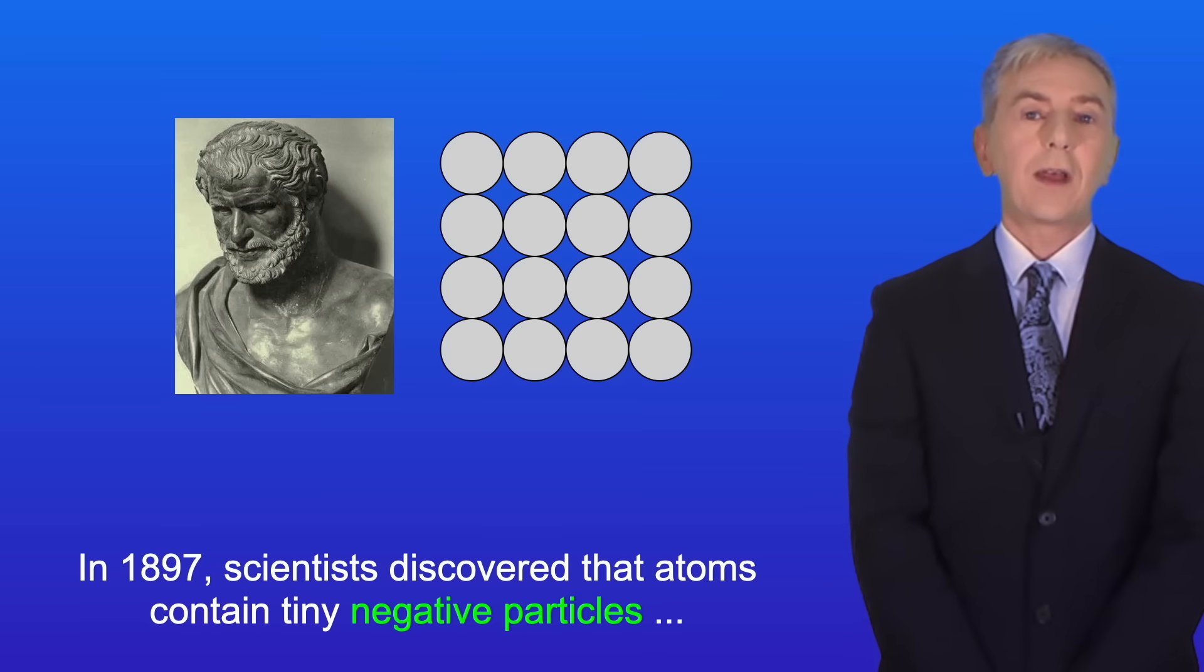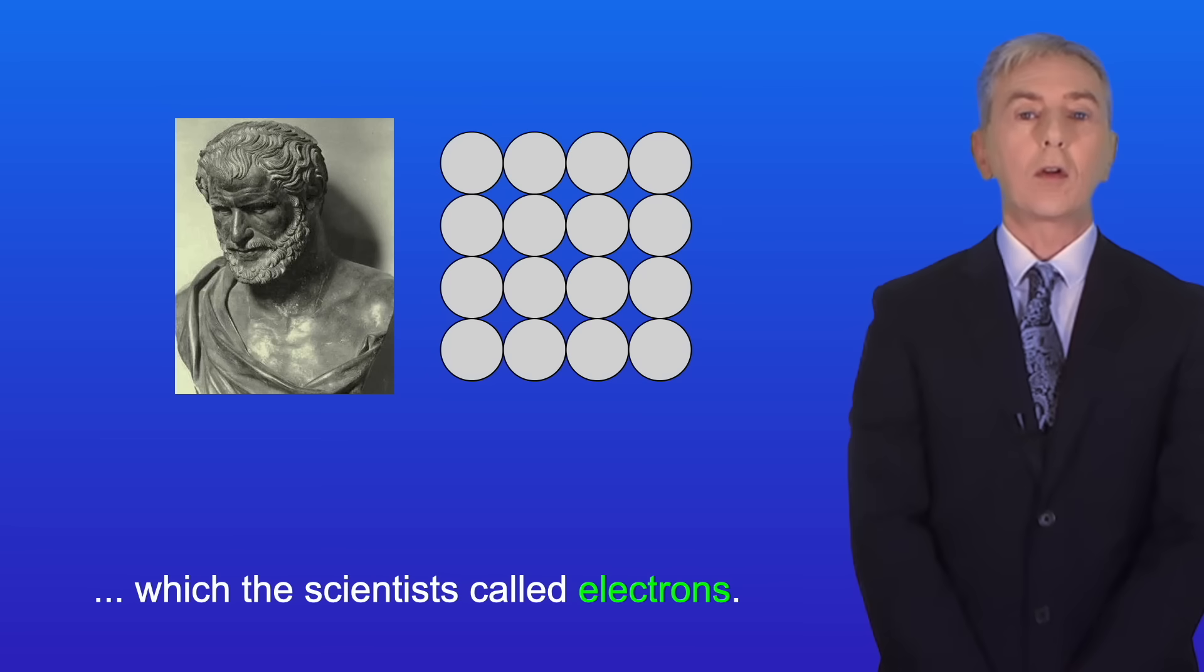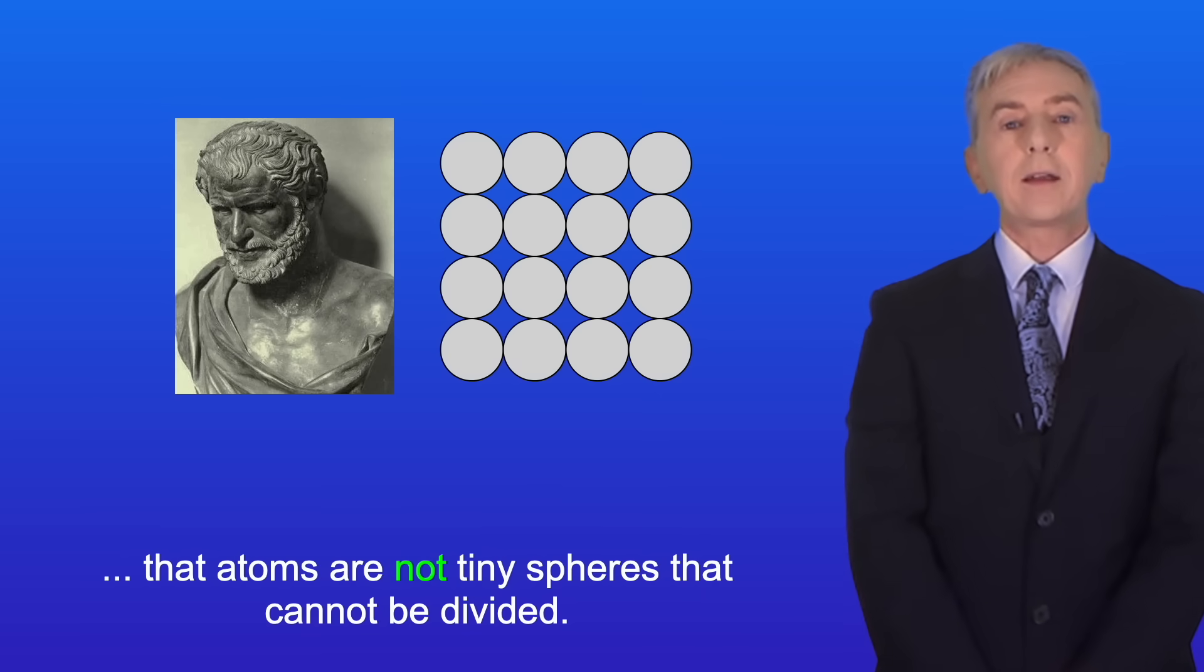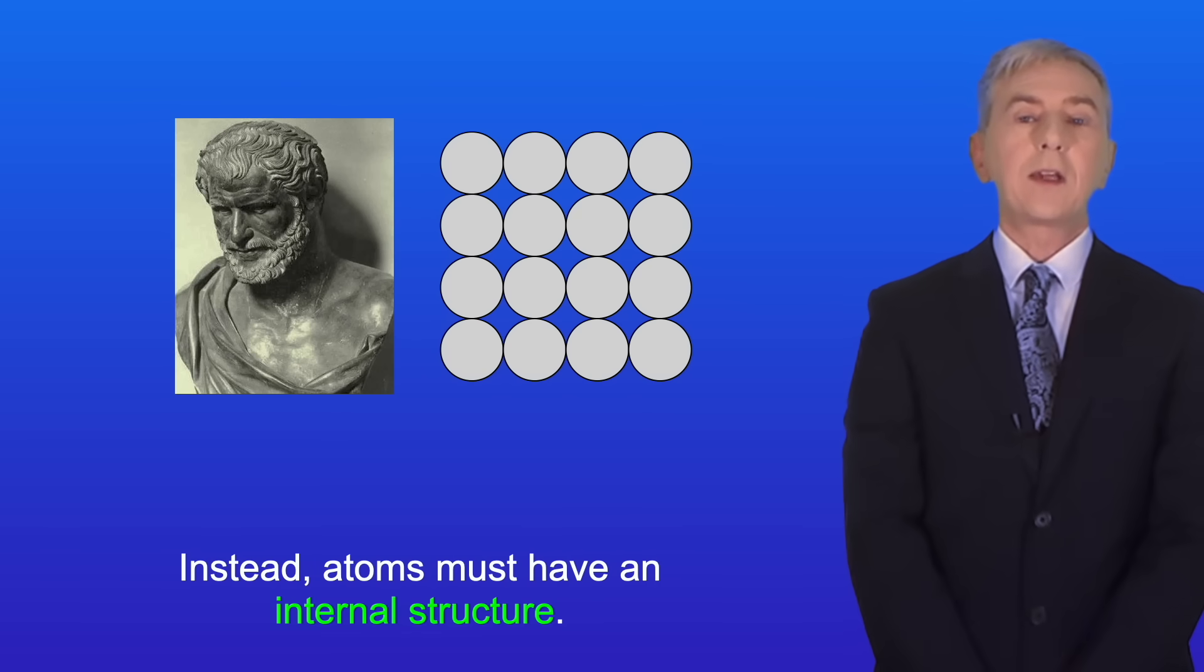Now in 1897 scientists discovered that atoms contain tiny negative particles which the scientists called electrons. The discovery of electrons told scientists that atoms are not tiny spheres that cannot be divided. Instead atoms must have an internal structure.